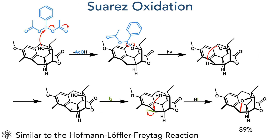This molecule was once again oxidized using a Suárez oxidation. Bis-acetoxyiodobenzene is first attacked by the hydroxyl group and eliminates an equivalent of acetate. Photoirradiation of this intermediate promotes the homolysis of the oxygen-iodine bond. The resulting oxygen radical then intramolecularly abstracts a hydrogen atom from the benzylic position, forming a carbon radical that then reacts with iodine. Another intramolecular reaction then occurs — the nucleophilic attack of the hydroxyl group onto the carbon iodide — forming the target five-membered ring in an 89% yield.